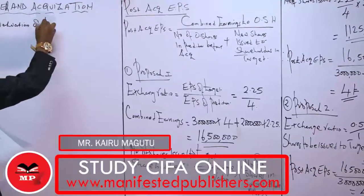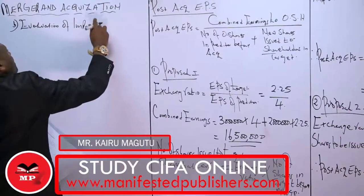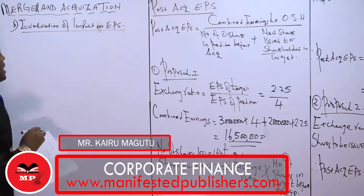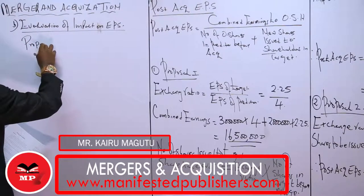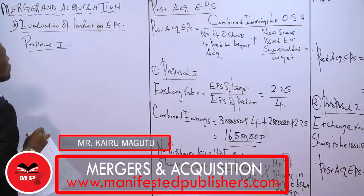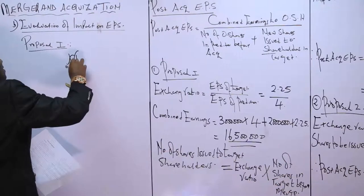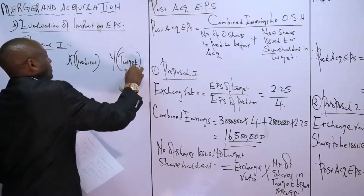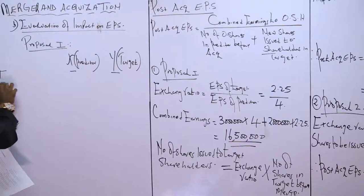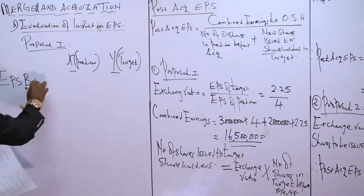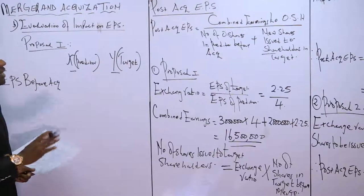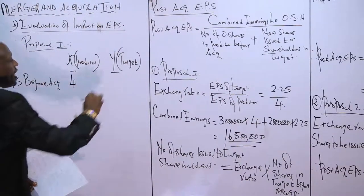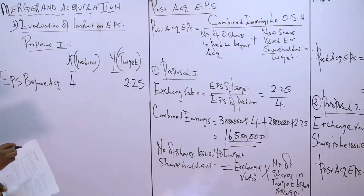We start with the evaluation of impact on EPS. In Proposal One, we have two companies: X, which is the predator, and Y, which is the target. We need the EPS before acquisition. From the question, X has an EPS of four shillings and Y has an EPS of two point two five shillings.